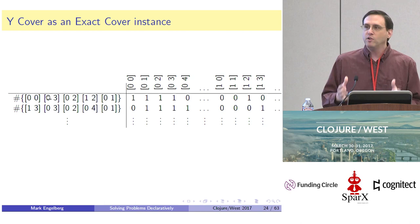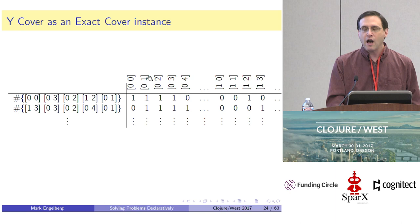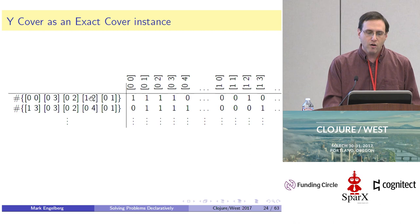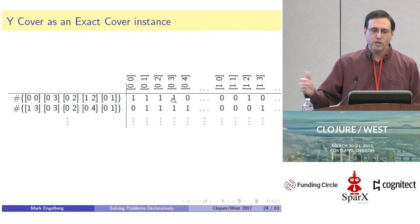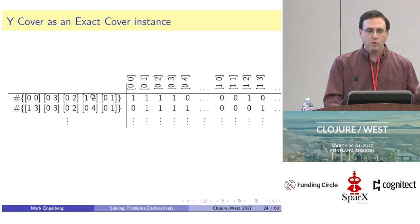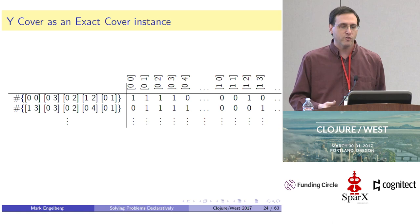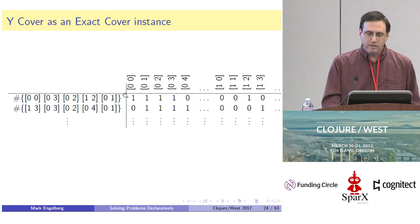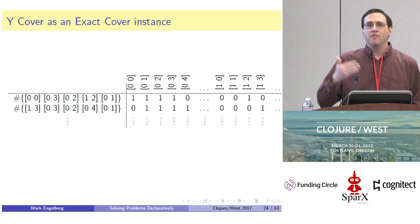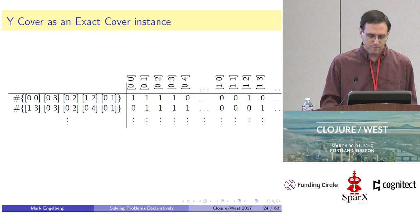The key idea is to make each row of the matrix labeled with a placement — one of those Y placements. The columns are all the different cells of the grid, and then for every placement we mark with a one all the cells it occupies. When we pump this into the Dancing Links algorithm, we get back a combination of rows that has exactly one one in each of these columns — a combination of placements that occupies every cell of the grid exactly once, which is exactly a Y-Cover.